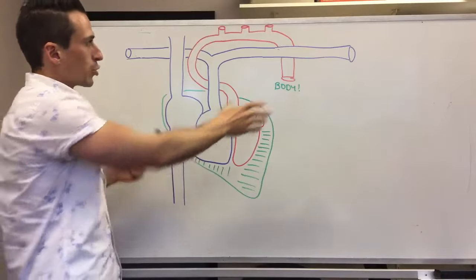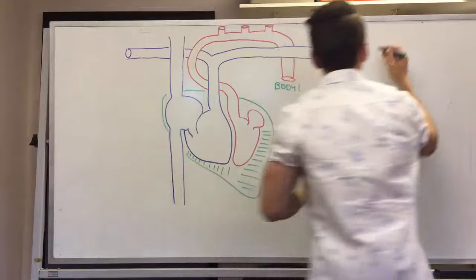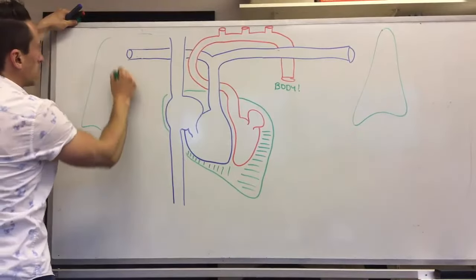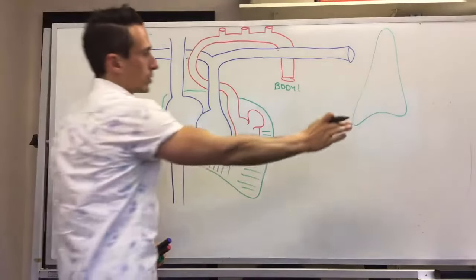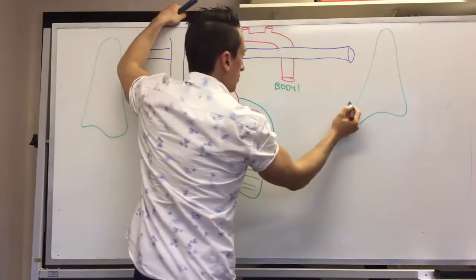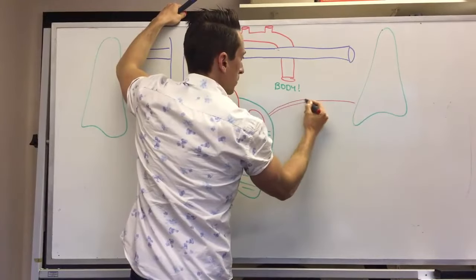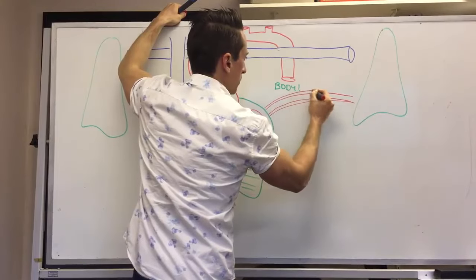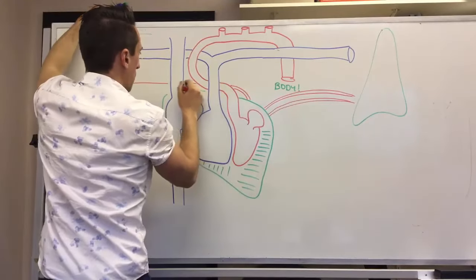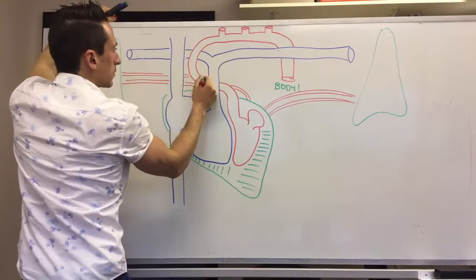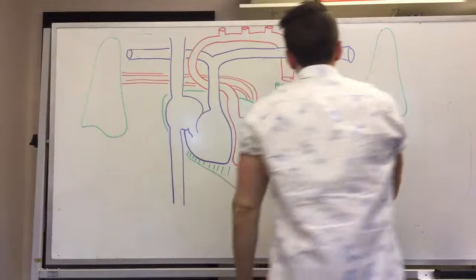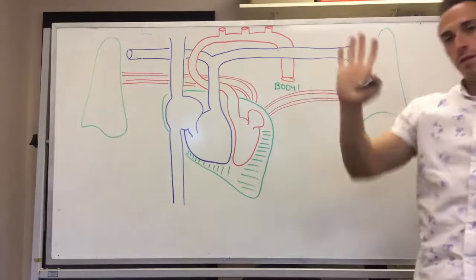Let's draw some very basic lungs either side — there's the left lung and the right lung. Now we draw the final blood vessels that come from the lungs to the left atrium. Drawing these in red: there are two pulmonary veins from the left lung and two from the right lung. So there are four pulmonary veins in total.